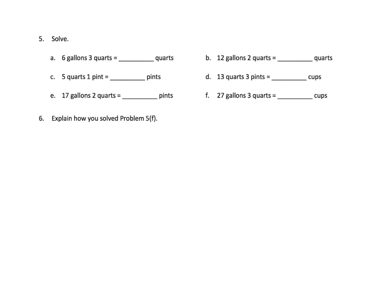So using those conversion tables, now we're basically just going to solve these problems. So let's do C. Five quarts, one pint, all right? So now we don't have to memorize this, parents and teachers. So if your students want a chart, give it to them.